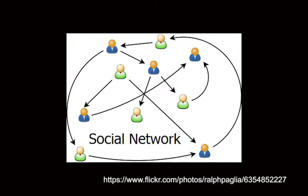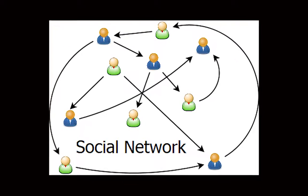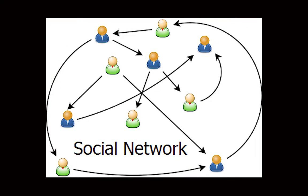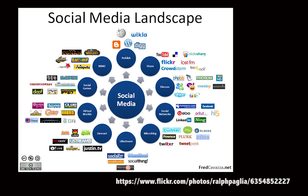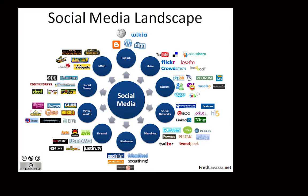Social media is a primary means of communication for many people. The social web is a network of sites where people connect with each other by means of text, video, photos, and all different forms of digital media. A social networking website is one that provides the ability to share content and media — YouTube, Twitter, LinkedIn, Google Plus — and they're always changing of course.